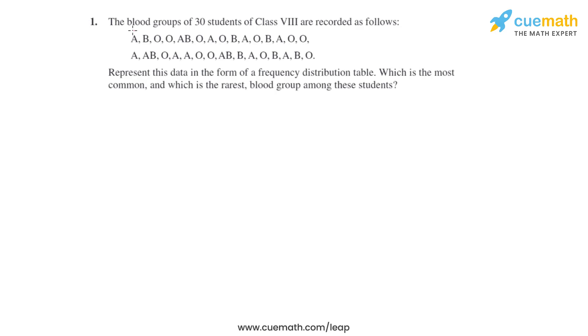Question number one of this exercise says that blood groups of 30 students of class 8th are recorded as follows. So this is the given data. The next part of the question says to represent this data in the form of a frequency distribution table and find out which is the most common and which is the rarest blood group among these students.